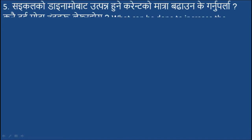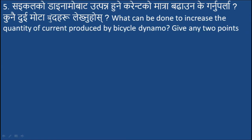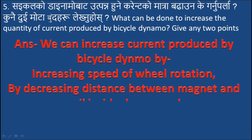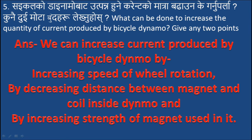Question 5: What can be done to increase the quantity of current produced by a bicycle dynamo? Give any two points. Answer: We can increase current produced by a bicycle dynamo by increasing the speed of wheel rotation, by decreasing the distance between magnet and coil inside the dynamo, and by increasing the strength of the magnet used in it.